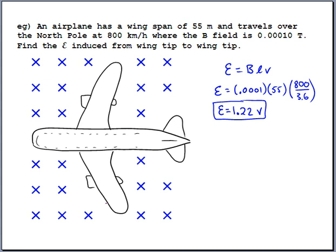The answer is 1.22 volts. That's where Physics 12 is supposed to stop for this example. But let's look a little more critically — could you use that voltage for anything? Could you power something like an iPod shuffle using this 1.22 volts?